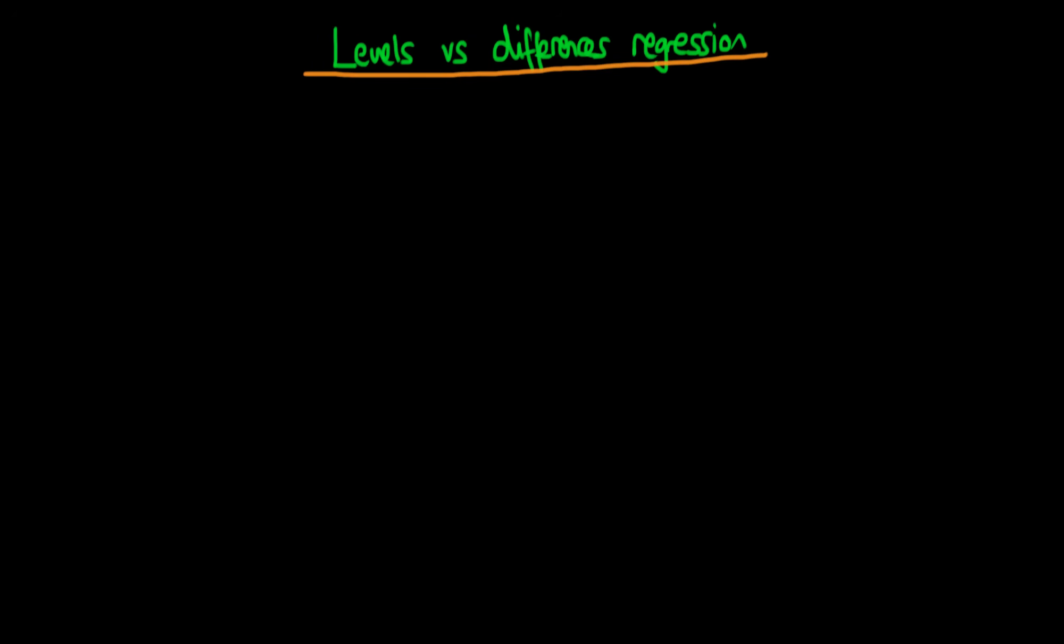In this video I want to talk about the difference between levels regression and regressions which use first differences. The idea with a levels regression is that we might be regressing yt on alpha plus beta times xt, and we've got some sort of error et which is left over.